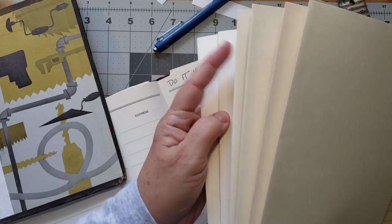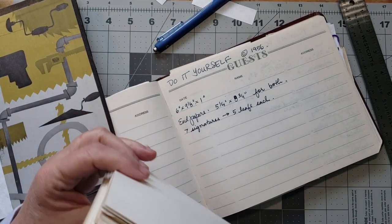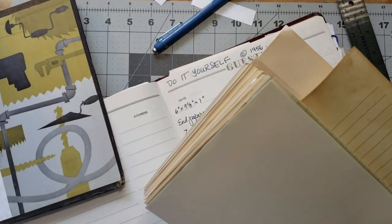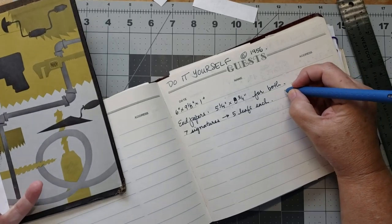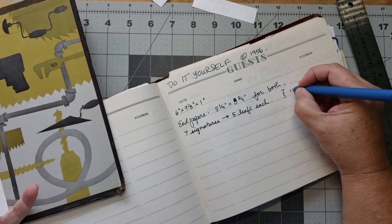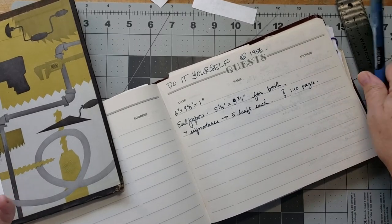And so, so here they all are. So there's one, two, three, four, five, six, seven. And that actually should give me 140 pages, which is nice.